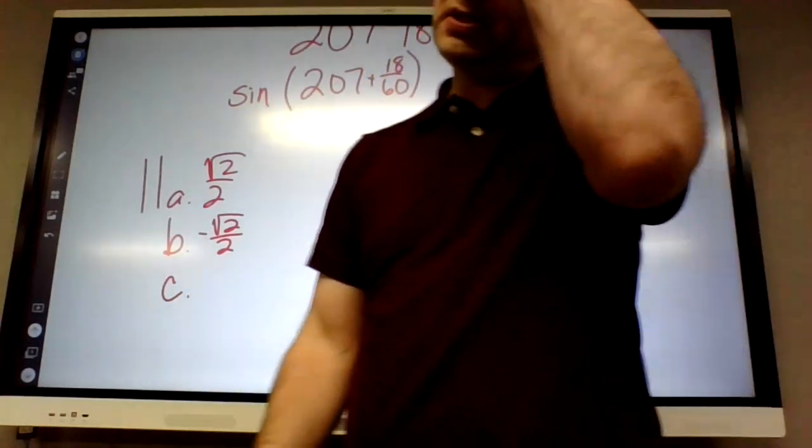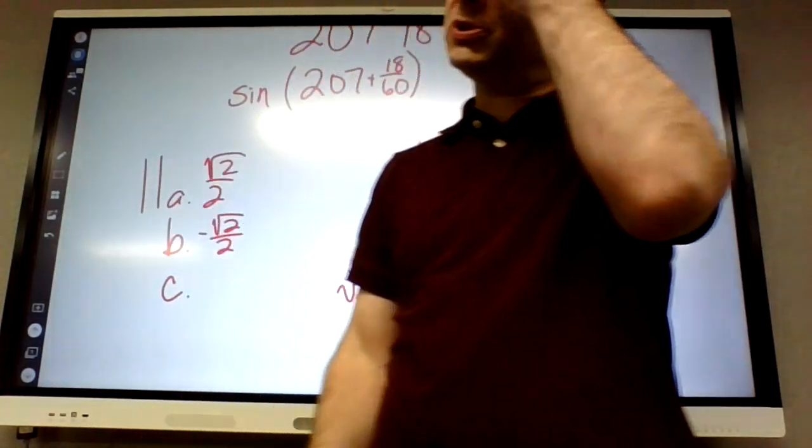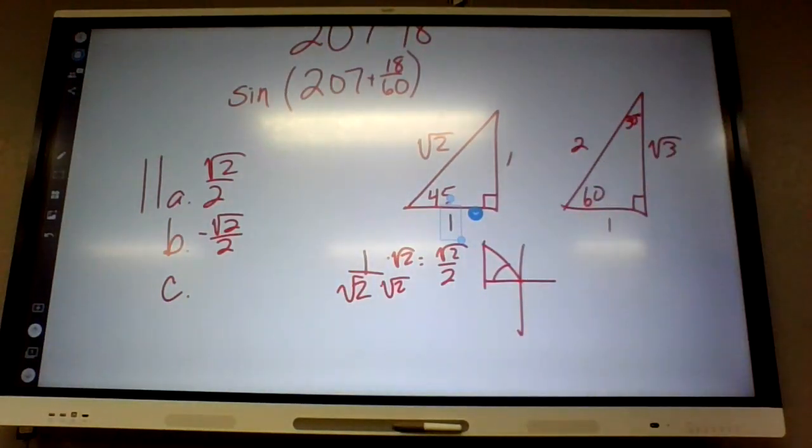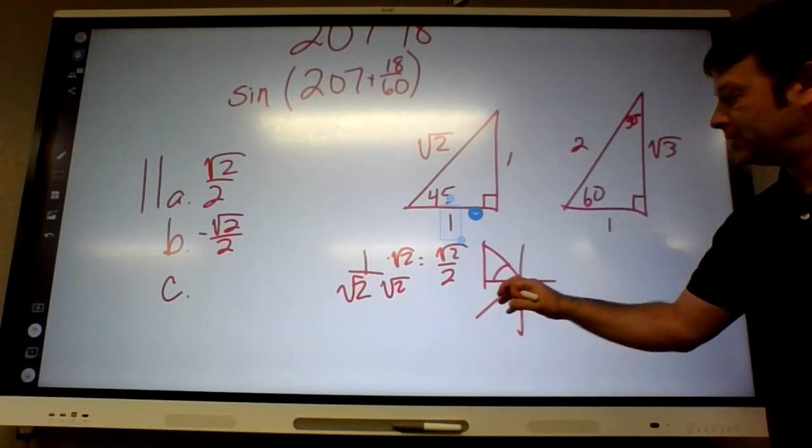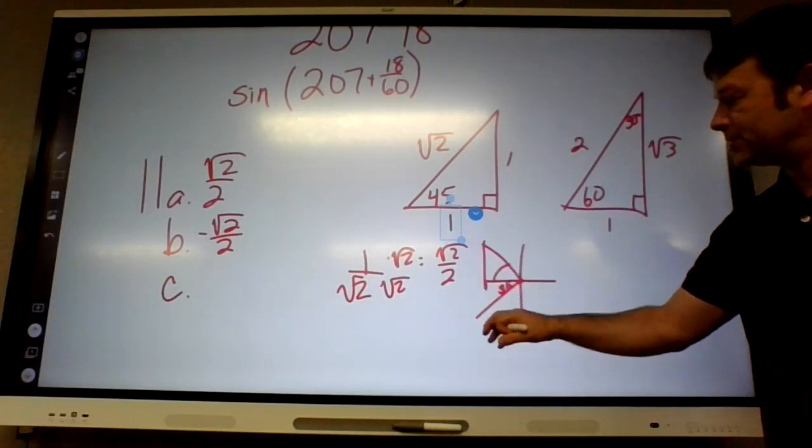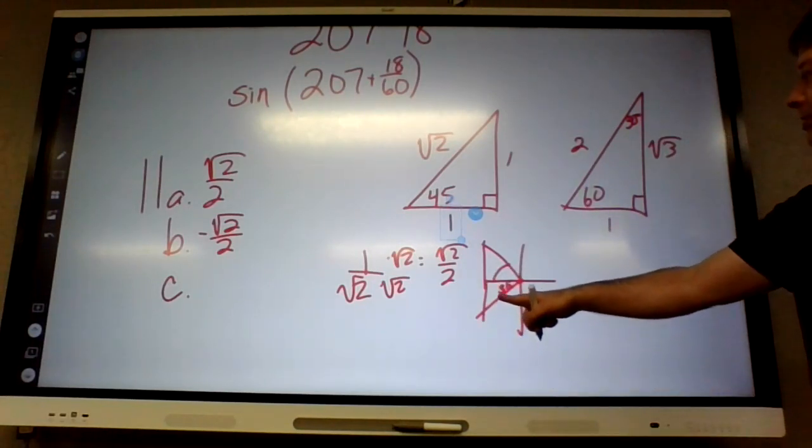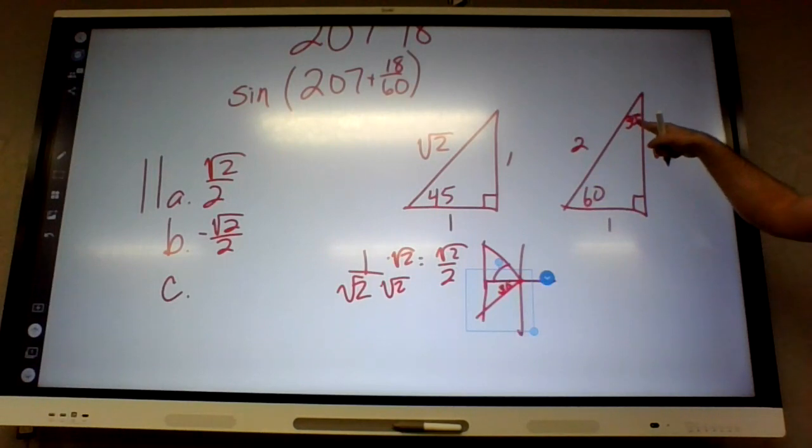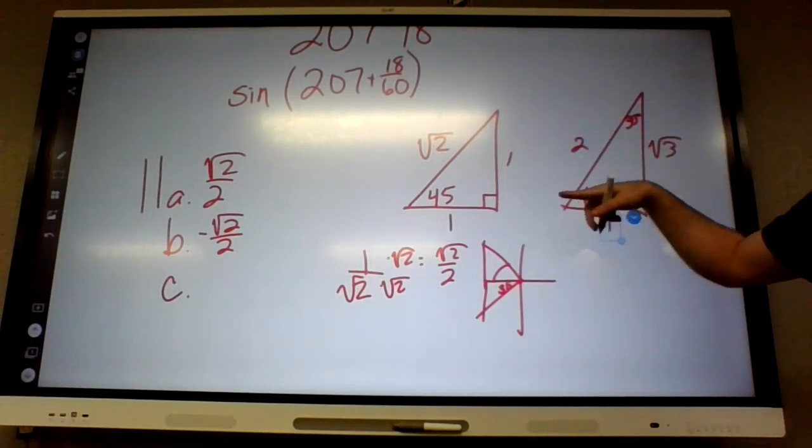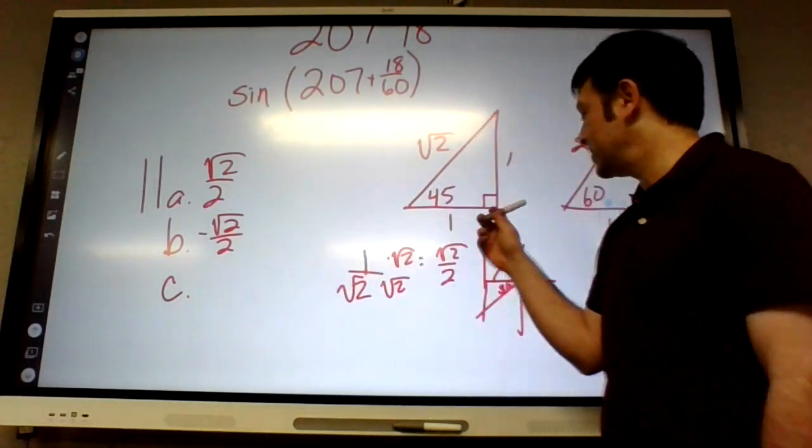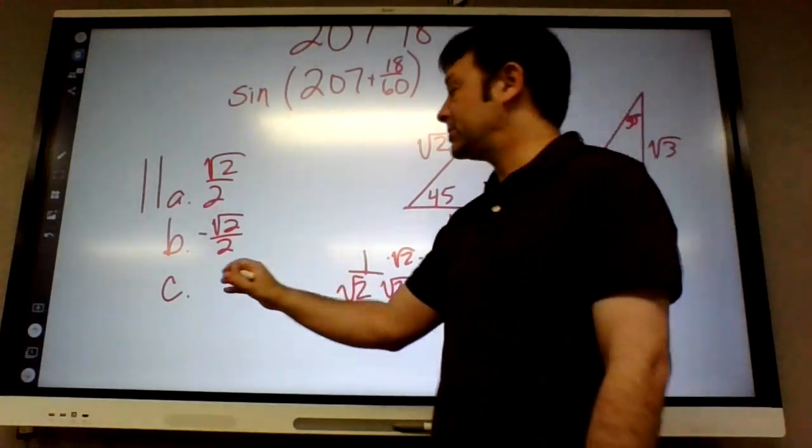And then sine of 210. 210 is, what's 210's reference angle? 30, it's 30 degrees off of 180. 210 is past 180, it's 30 degrees past, so it's in the third quadrant. So sine is opposite over hypotenuse, so it should equal 1 half. But since sine is negative in the third quadrant, it's negative 1 half.